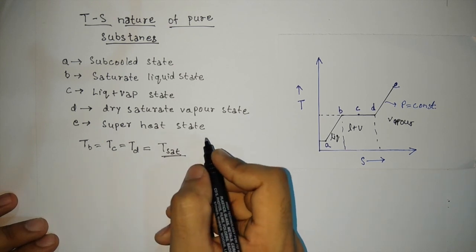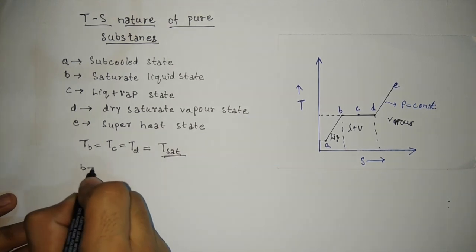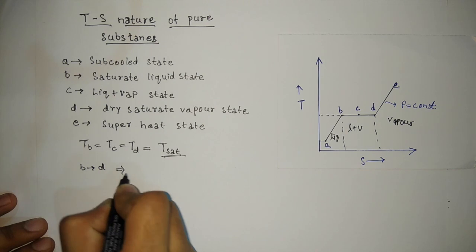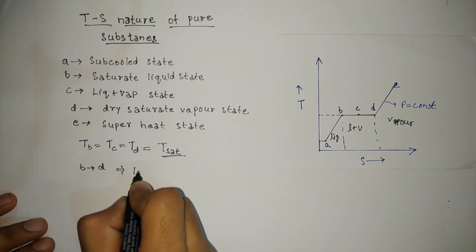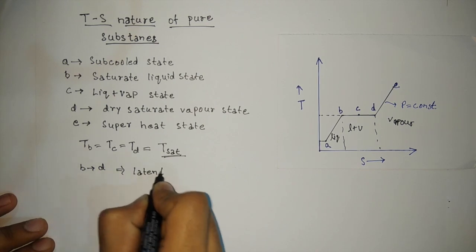The temperature at B equals the temperature at C equals the temperature at D, and this is known as the saturation temperature. The heat absorbed between B and D is known as latent heat.